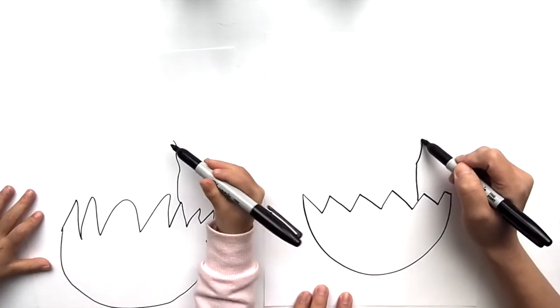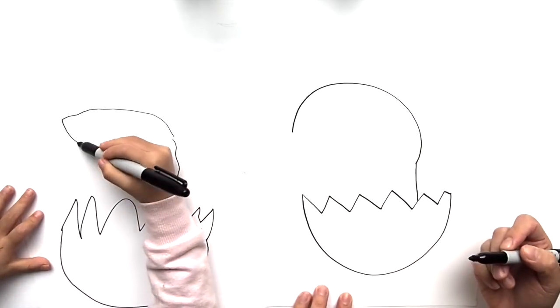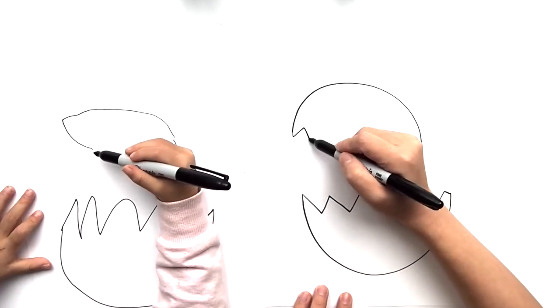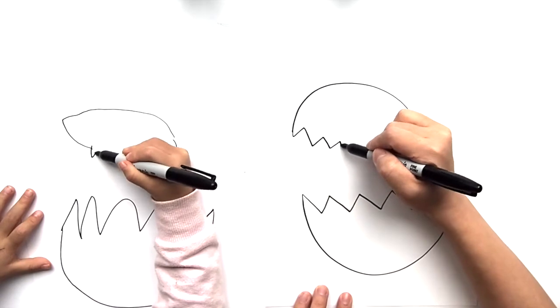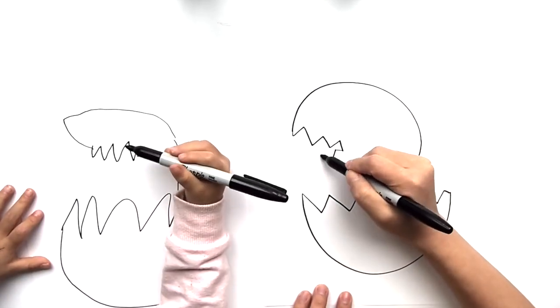And then we're going to draw the head, like sort of like a semicircle. Good. And after that, we're going to draw its mouth, its jaws, so make some crooked, jagged edges. And on the other side too.